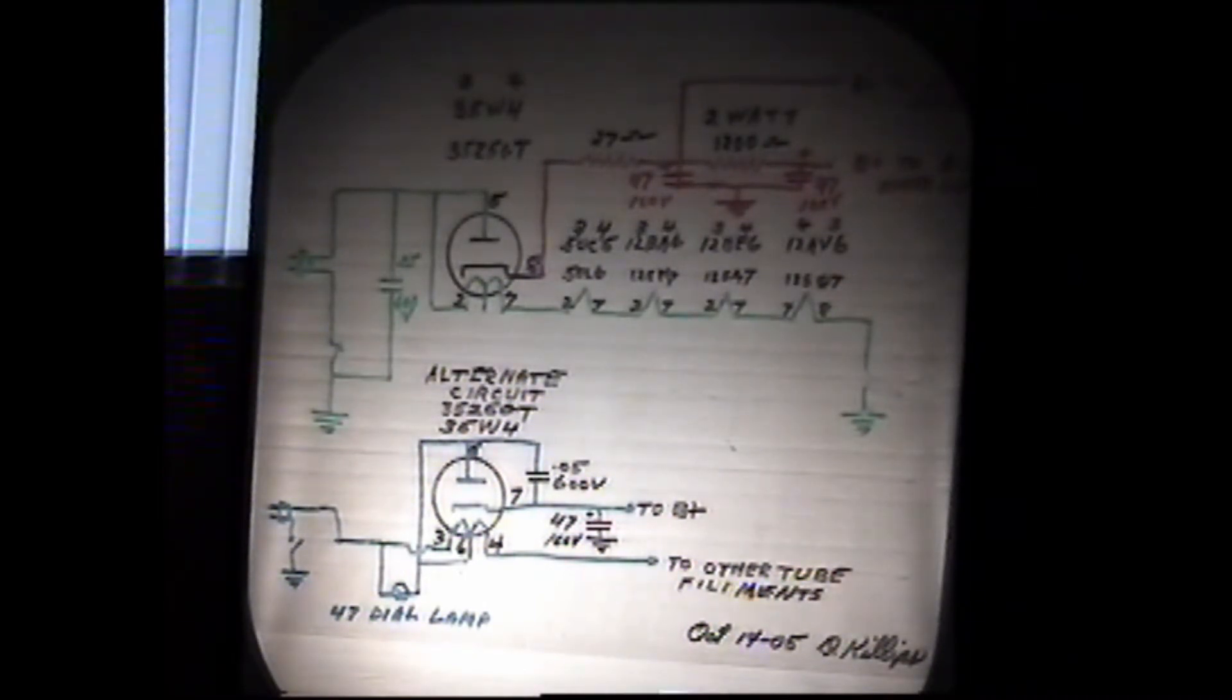So anyway, the new five-tube radios, they're built on printed circuit boards. They don't have any floating ground. Usually the variable condenser is connected to AVC, and the volume control is mounted on a piece of plastic or something and it's insulated from ground. It may have a capacity from the control to the ground, but they're much the same, but they have eliminated that floating ground.